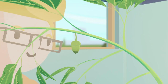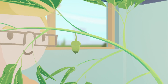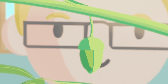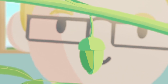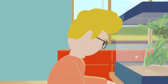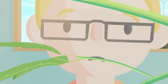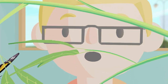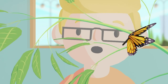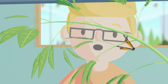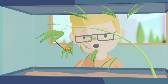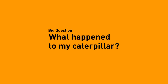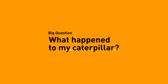I looked everywhere, but all I could find was this little green thing hanging from one of the leaves. For two weeks, that was it. And then all of a sudden, one day, I found a butterfly flying around in the cage. But where did my caterpillar go? That's our big question for today. What happened to my caterpillar?